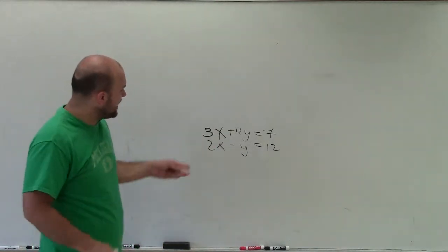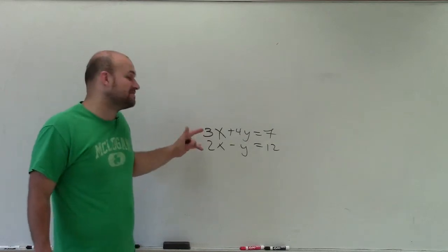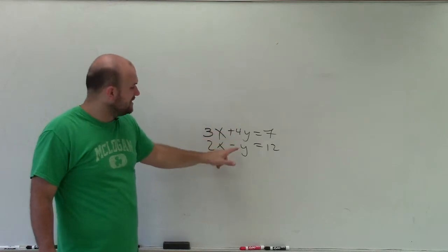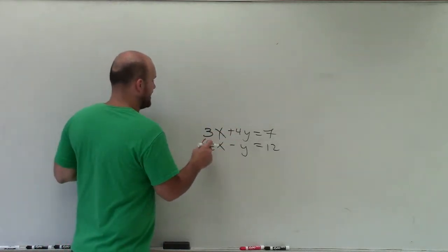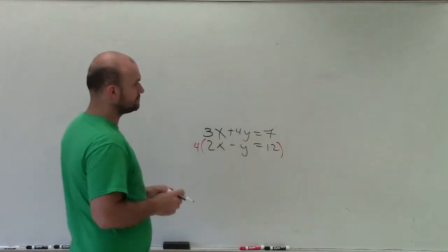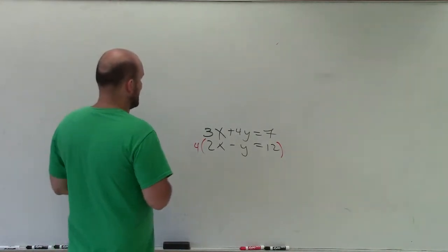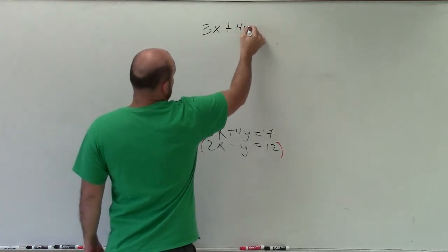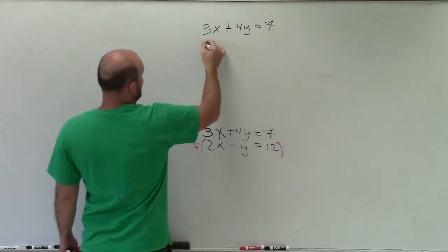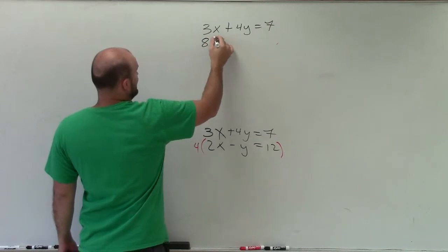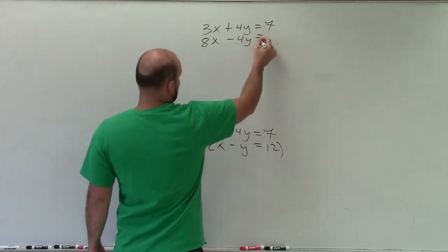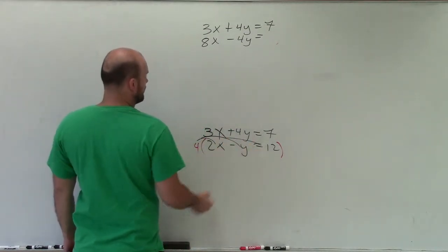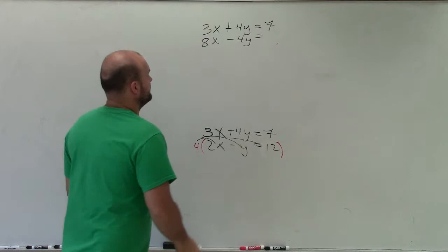Then make sure our coefficients are the same. Now here, to get these coefficients the same, I have to multiply by a multiplier on the top equation and the bottom equation. However, for y, all I need to do is multiply my bottom equation by 4. So when I do that, I am now going to produce a new equation, a new system equation of 3x plus 4y equals 7, and 8x minus 4y equals, so 4, 4, 4, so 24 would be 48.